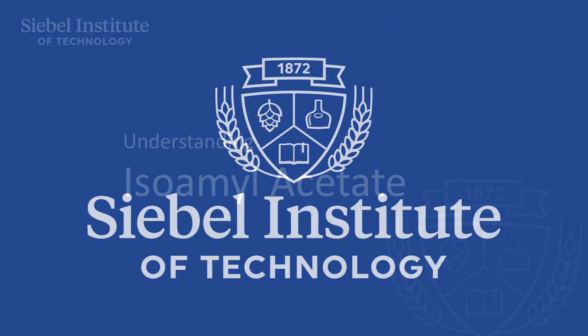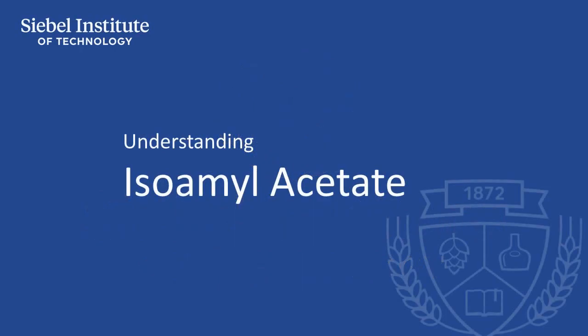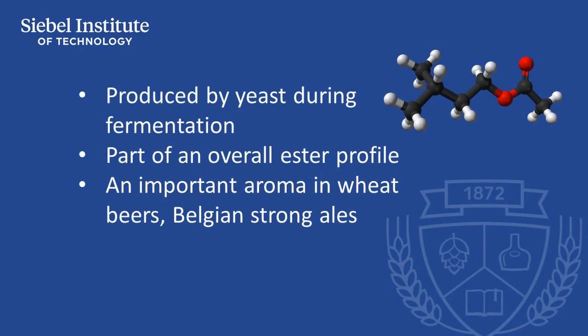Isoamyl acetate is an ester that is produced by yeast during fermentation. It's usually found in low concentrations as part of an overall ester profile that gives beer fruity characteristics.